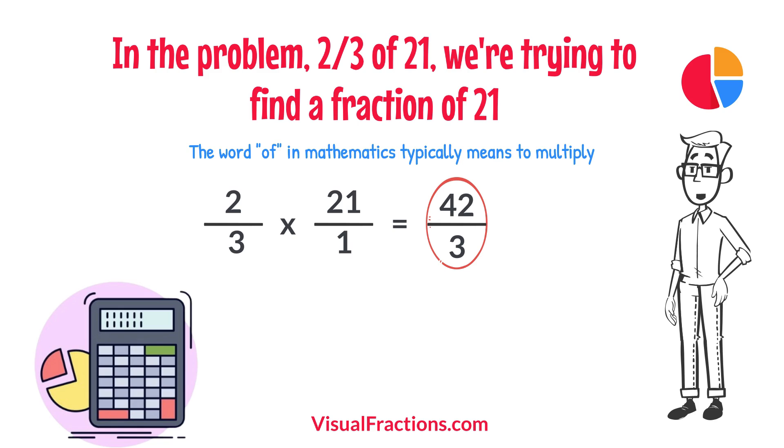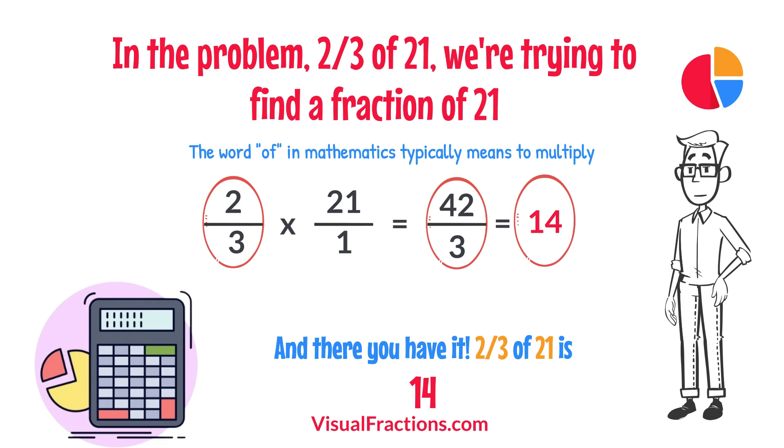To find the final answer, divide the numerator by the denominator. So, 42 divided by 3 equals 14. And there you have it. Two-thirds of 21 is 14.